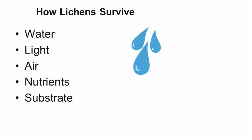The fungus is primarily responsible for absorbing water so that the algae can survive. Like plants, light is needed so the algae can photosynthesize to create the food it needs to survive. The algae produces carbohydrates through photosynthesis, and the fungi uses those carbohydrates to grow.